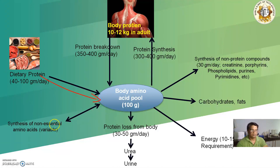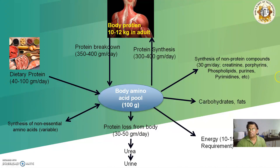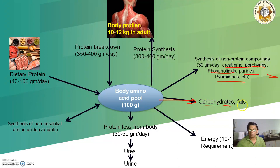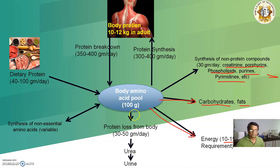From the synthesis of non-essential amino acids, these feed back into the amino acid pool vice versa. From the amino acid pool, synthesis of non-protein compounds like creatinine, porphyrins, phospholipids, purines, and pyrimidines are all made. Likewise, amino acids contribute to synthesis of carbohydrates and fats, and in production of energy — nearly about 10 to 15% of body energy requirement is covered by amino acids. The main source is glucose, and excretion of protein loss occurs in the form of urea in urine, nearly about 30 to 50 grams.